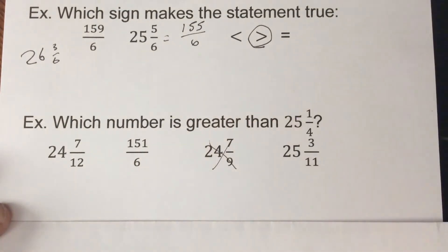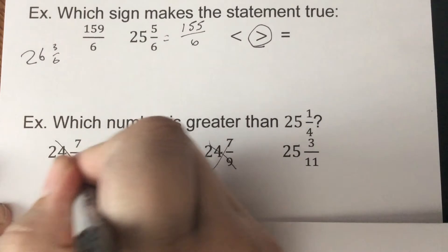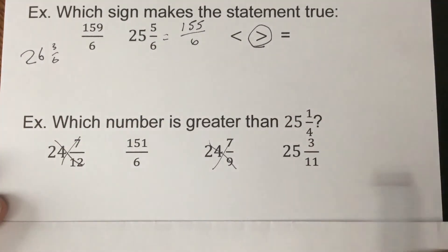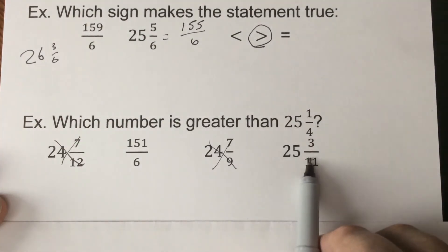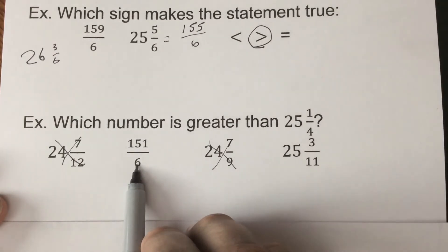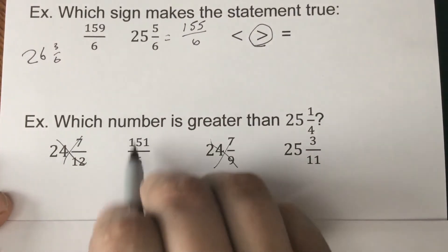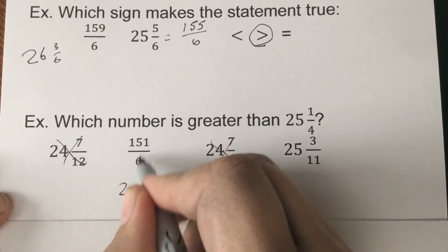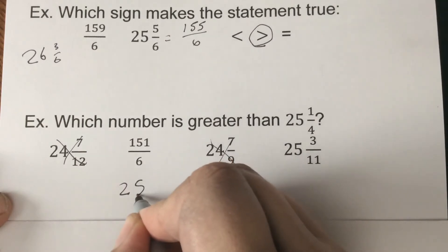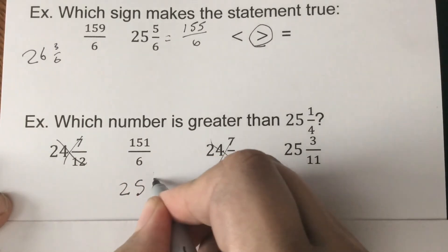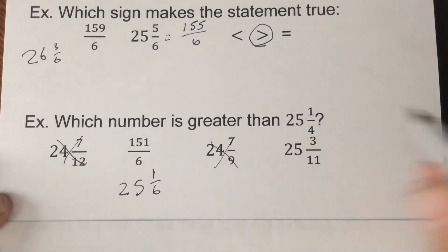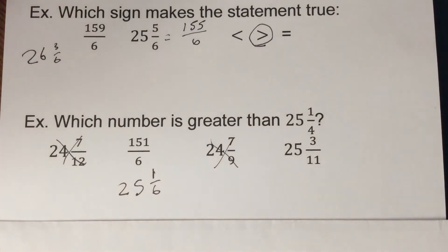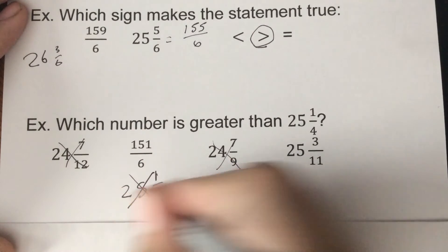So 24 and 7/9 isn't going to be bigger. Neither will 24 and 7/12. Now 25 and 3/11 could. 151 over 6 could. So if we divide this, 6 goes into 15, it'd be 2, and then to get 30 would be 5 times. And then we'd have 1/6 left. So 1/6 and 1/4, well 1/4 has a bigger denominator, so those are bigger pieces compared to 1/6. So this one isn't going to work.